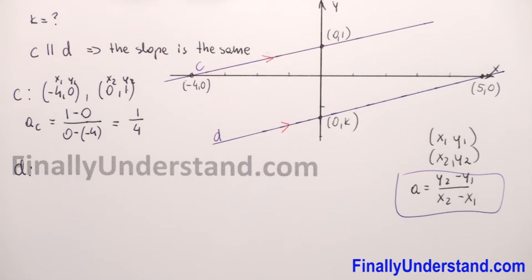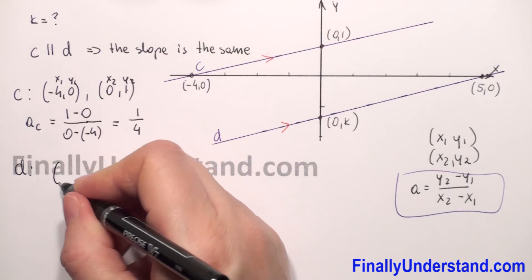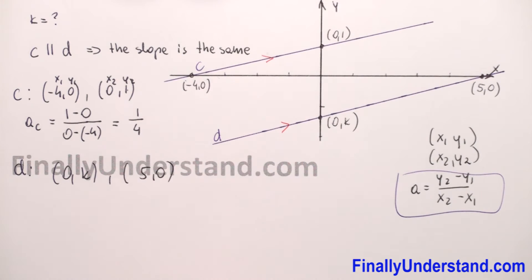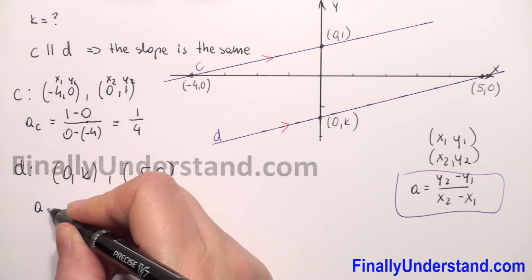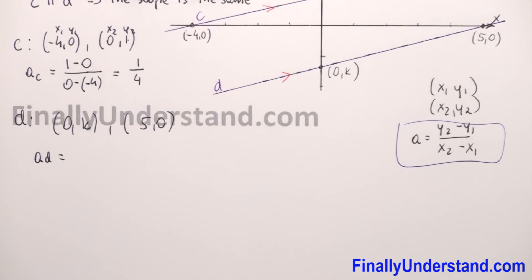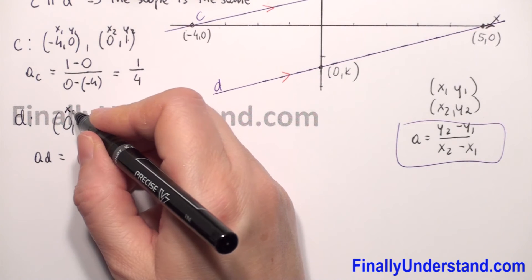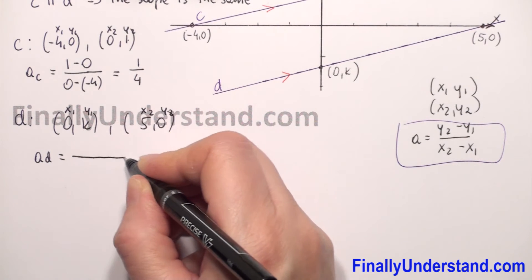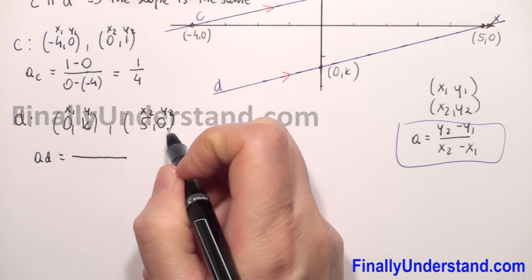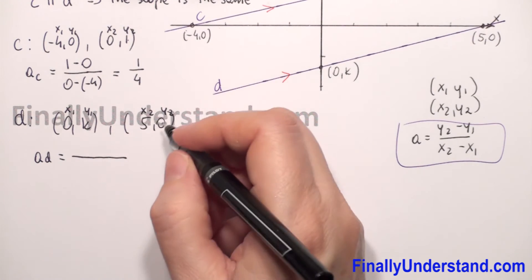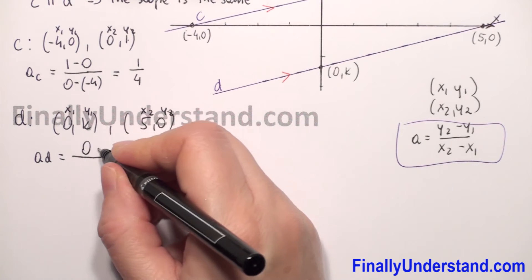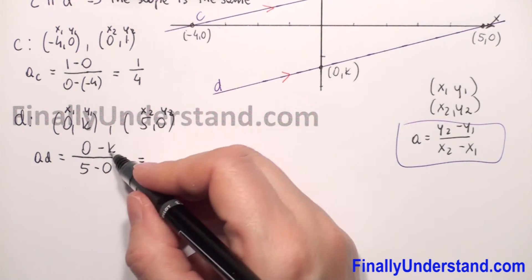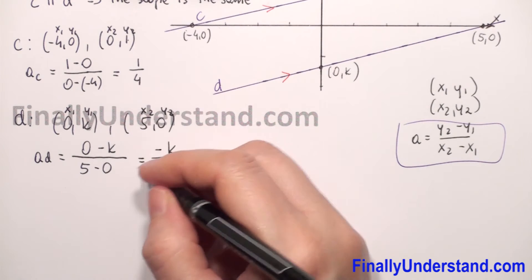Now we will go to line D. Line D has points 0, k and 5, 0. So again we will calculate the slope of line D — this is our first point x1, y1 and the second x2, y2. When we calculate the slope, in the numerator we subtract the second coordinates and in the denominator the first coordinates, so we have y2 minus y1: that's 0 minus k over 5 minus 0, which equals negative k over 5.